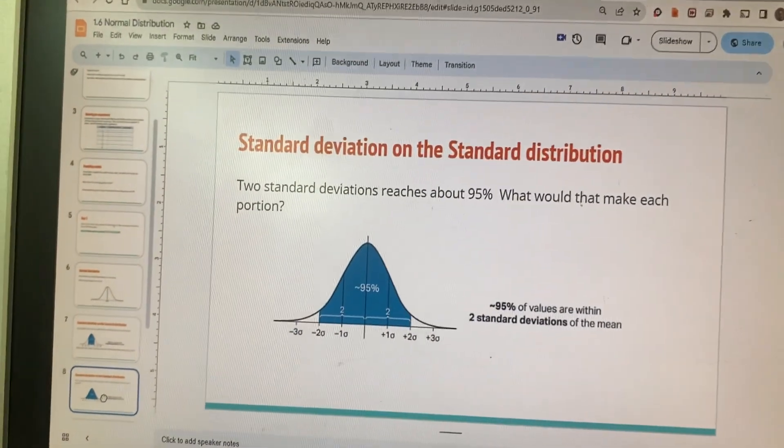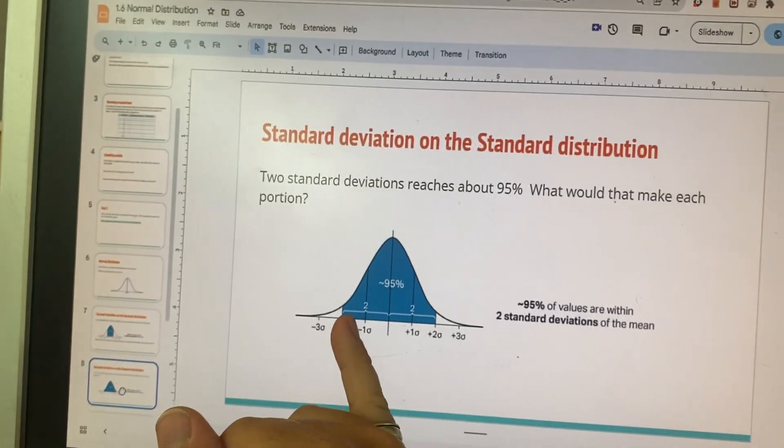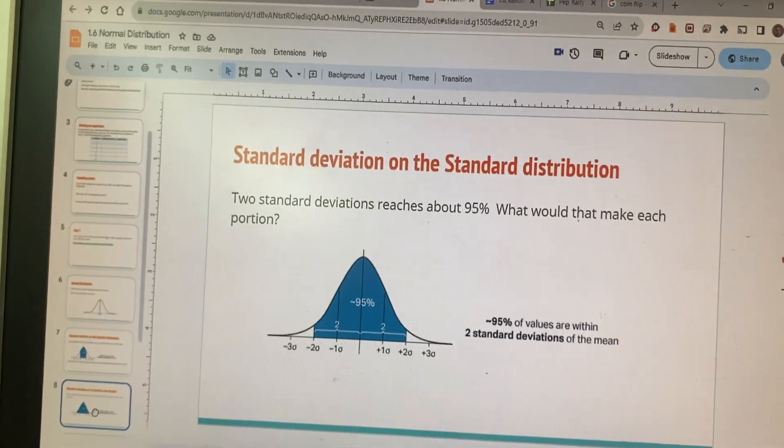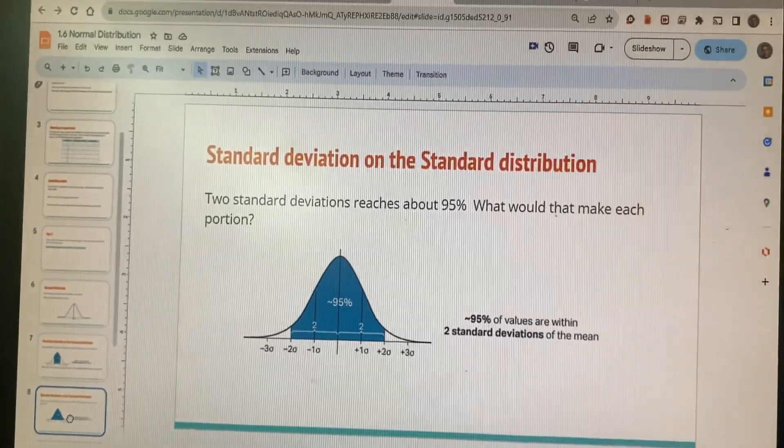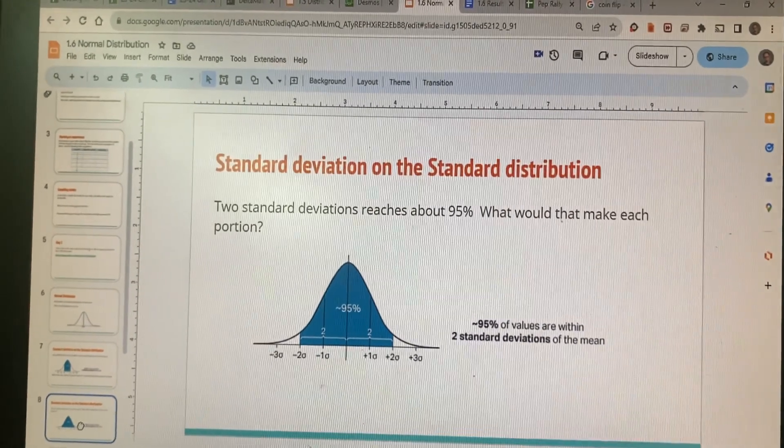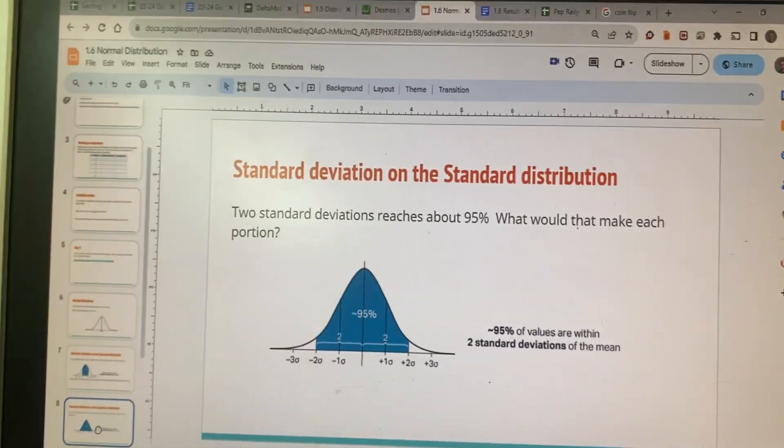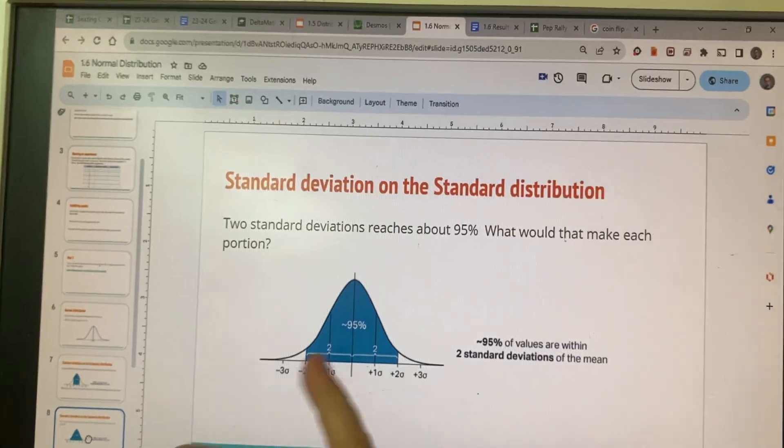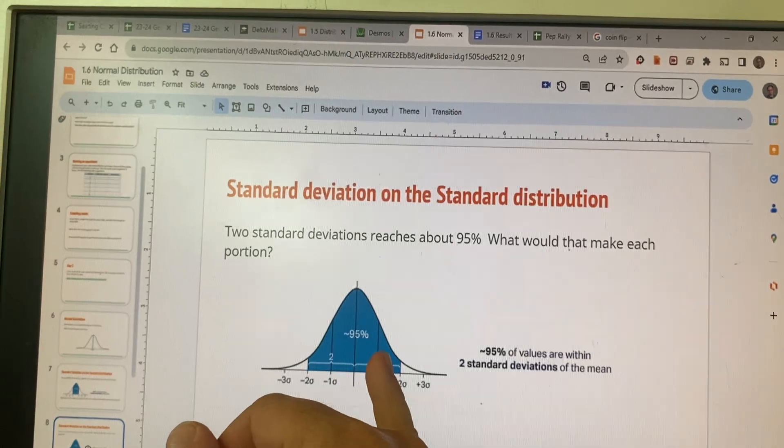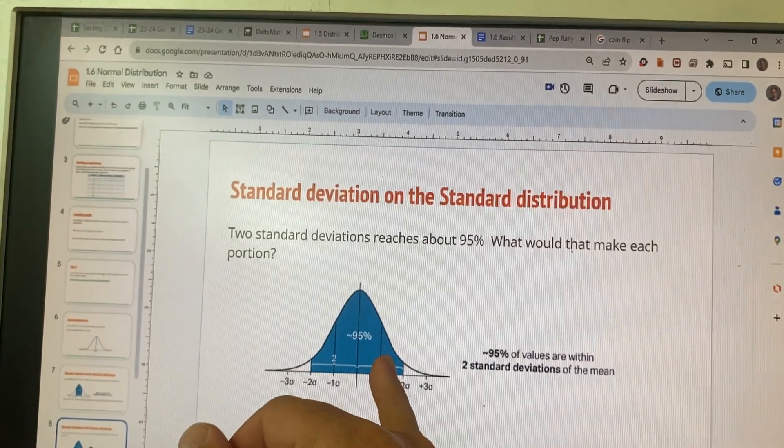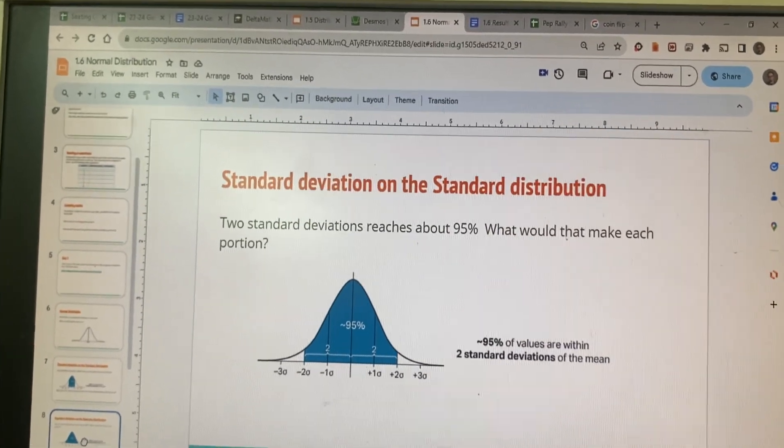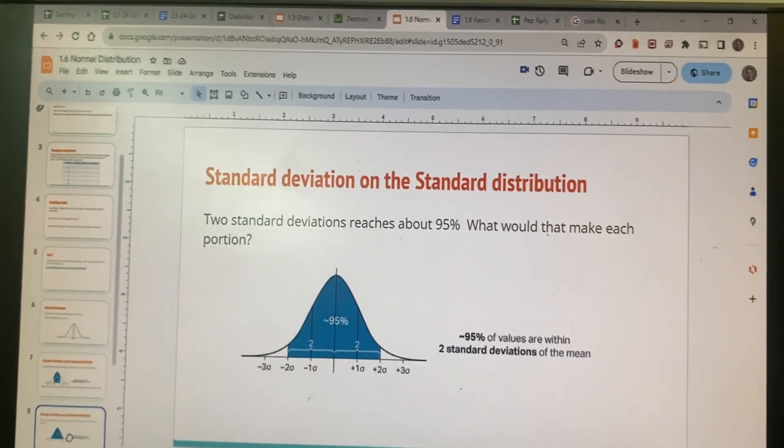When we have two standard deviations, this should be 95% of the data. So if you're quick on the subtraction there, that would be 95% minus 68%, so that'd be 27% split between these two. So this one's going to be 13.5%, this one's going to be 13.5%. Make sure you get those divisions just right. That's going to be important today.